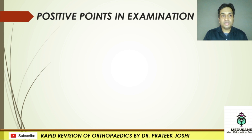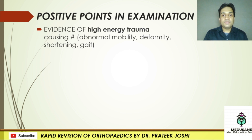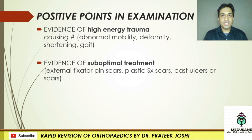For positive points in examination, we look for evidence of high energy trauma causing a fracture — such as abnormal mobility at the fracture site, deformity where the mechanical axis of the limb is not in the normal anatomical axis if the fracture has partially united, and shortening in the tibial or femoral component. All of these — abnormal mobility, deformity, and shortening — will lead to a specific gait. There would also be evidence of suboptimal management: multiple surgical scars, cast ulcers or cast scars, and pin track scars from external fixation.